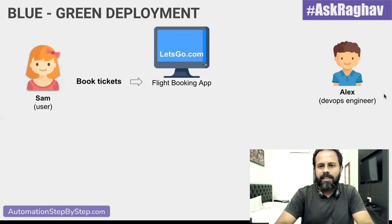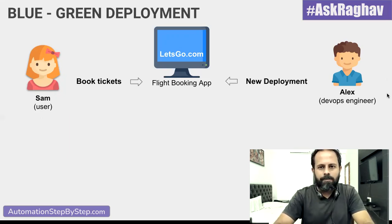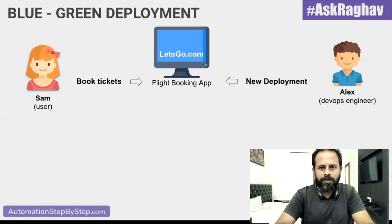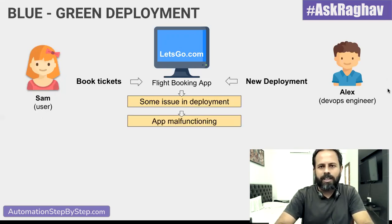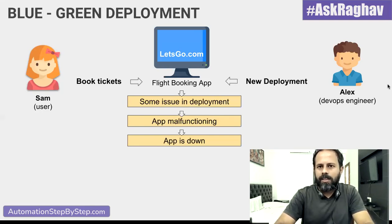Now let's say there is a new release, a new update, and Alex wants to deploy this update on the application. So he does this new deployment on the application which is being used by the users. During the deployment process there is some issue, the application is malfunctioning and they have to bring down the application. This is a lot of problem for the user as well as for the dev team.